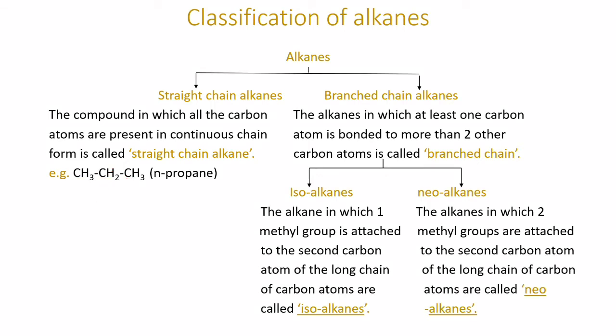Branched chain alkanes are further classified into two types: first isoalkanes, second neoalkanes. Isoalkanes: The alkane in which one methyl group is attached to the second carbon atom of the long chain of carbon atoms are called isoalkanes. When one methyl, that is CH3 group, is attached to the second carbon, an isoalkane is formed.